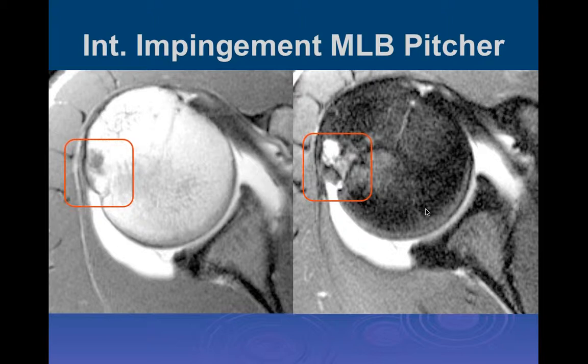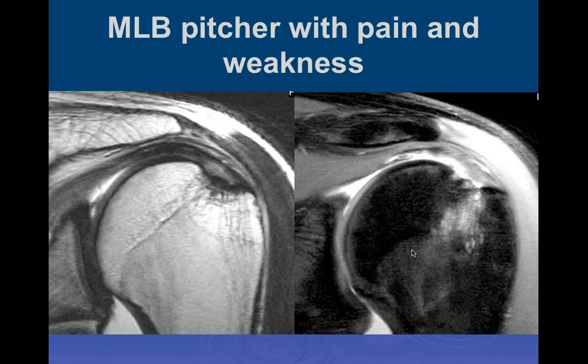A little bit older person - a Major League baseball player. We can see a little defect from the chronic impingement and the labral tear at the posterior superior labrum in its characteristic location. Here's another Major League baseball pitcher - there's the impaction injury, and instead of a tear we can see hypertrophy of the labrum due to years of chronic injury to the posterior superior labrum.